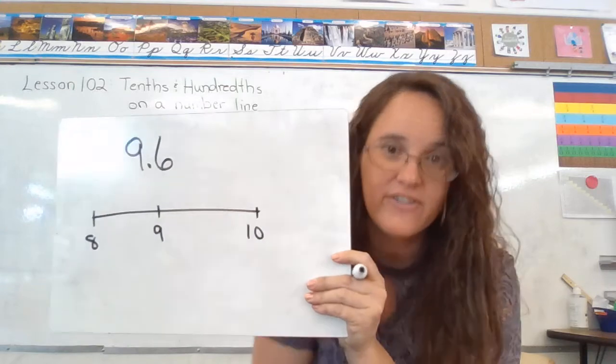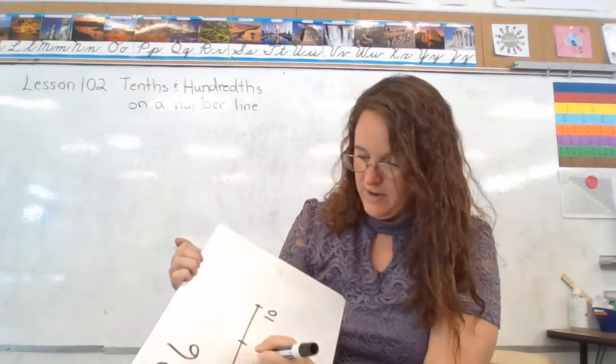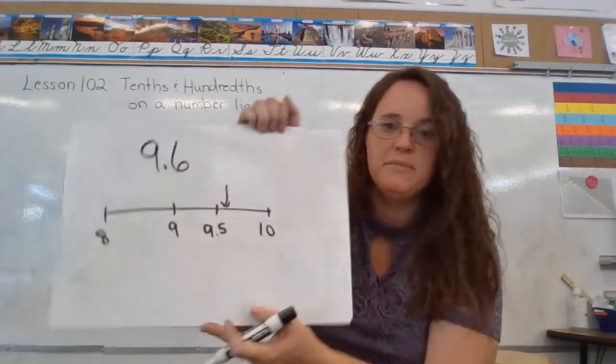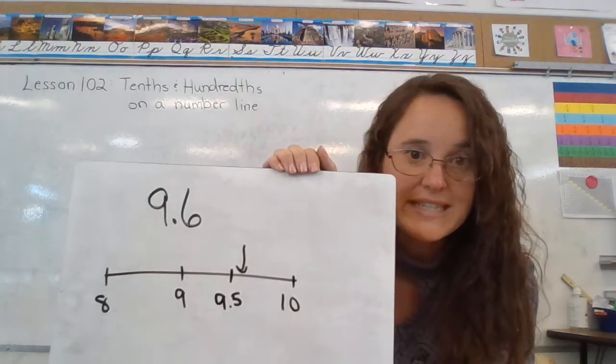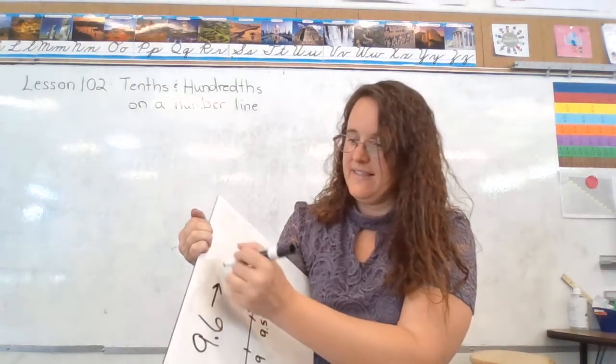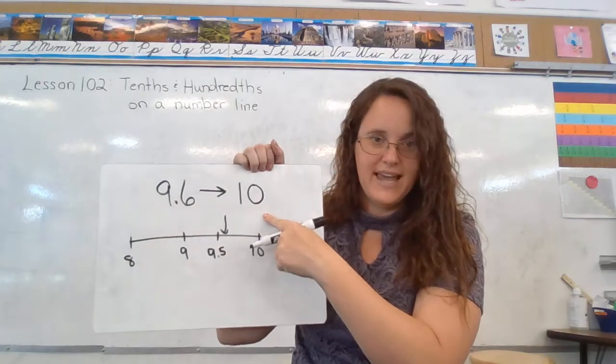So here, this right here would be 9 and 5 tenths. So 9 and 6 tenths is going to be right about there, which is slightly closer to the 10. So 9 and 6 tenths rounds to the whole number 10.